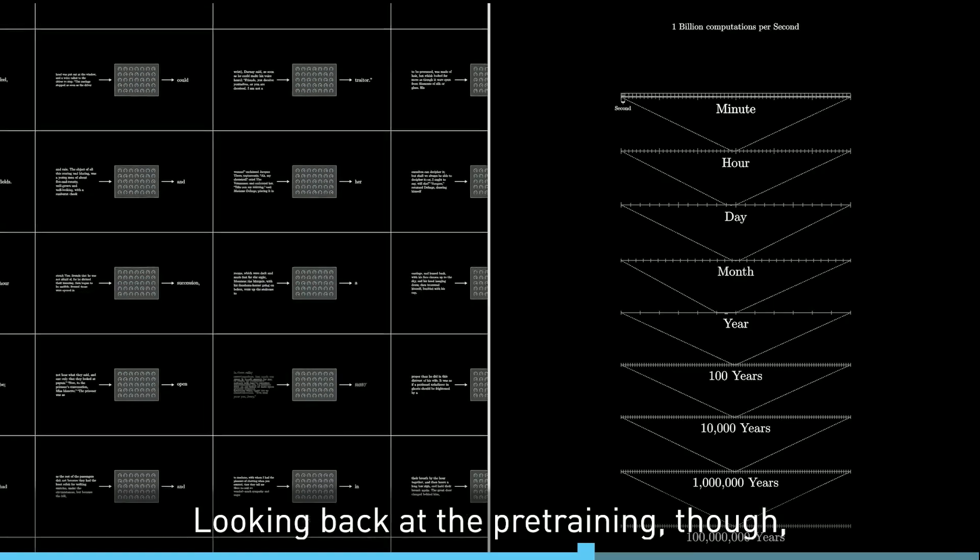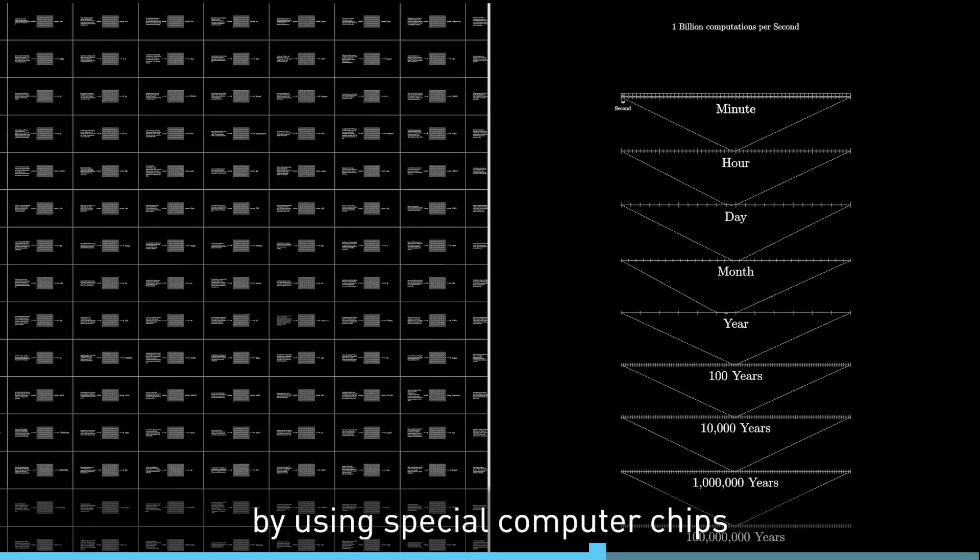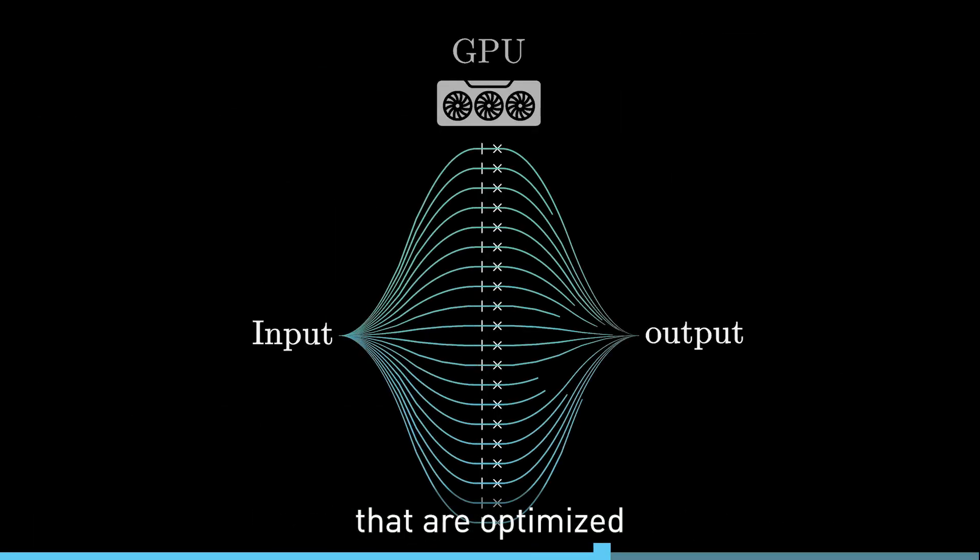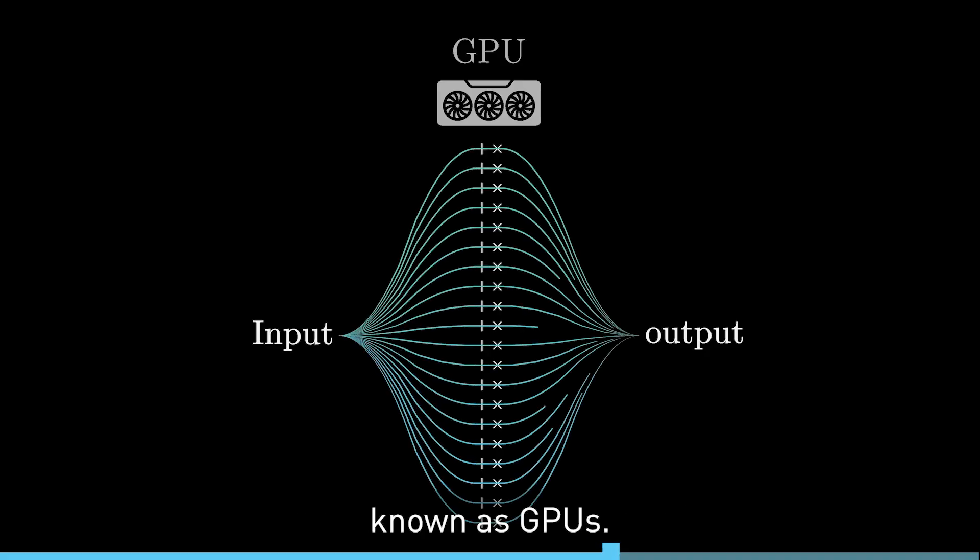Looking back at the pre-training though, this staggering amount of computation is only made possible by using special computer chips that are optimized for running many, many operations in parallel, known as GPUs.